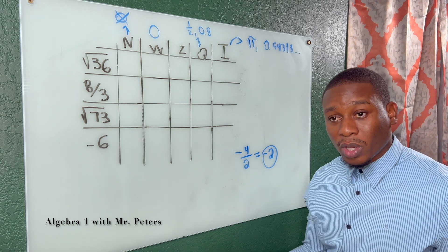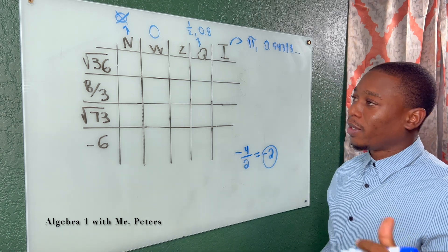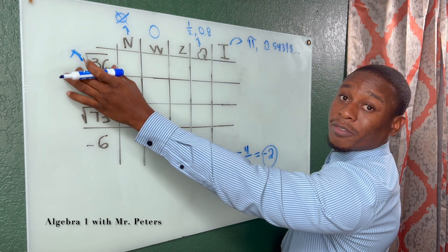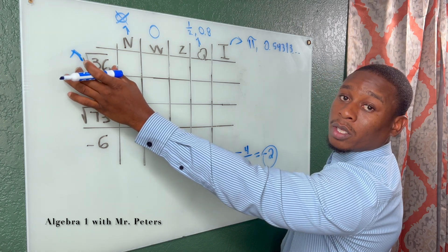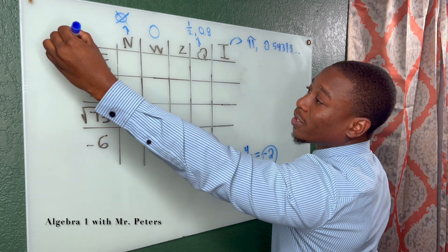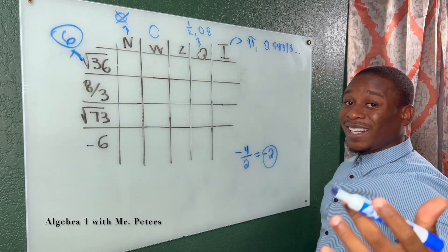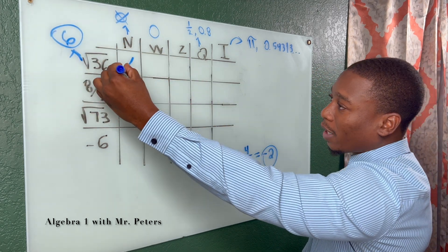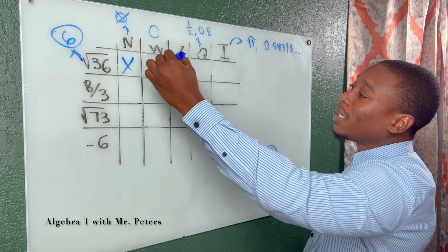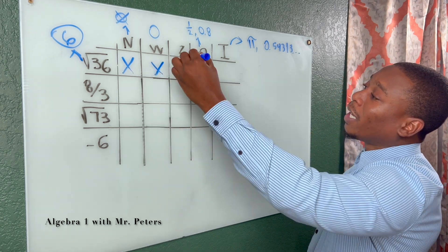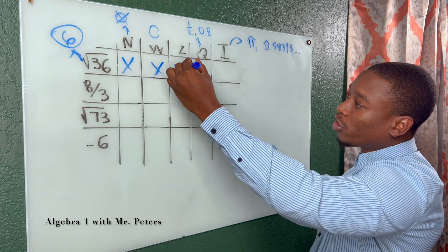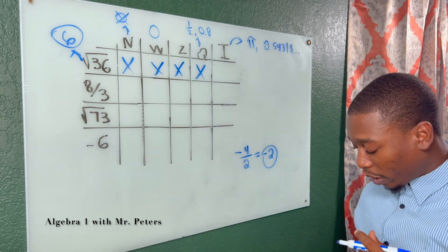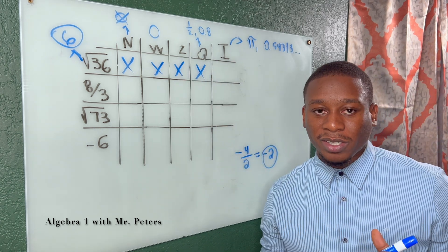Before classifying, always see if you can simplify first. With the first example, the square root of 36 is 6. When we classify 6, it is a natural number, a whole number, an integer, and it is rational — it fits all four of those categories.